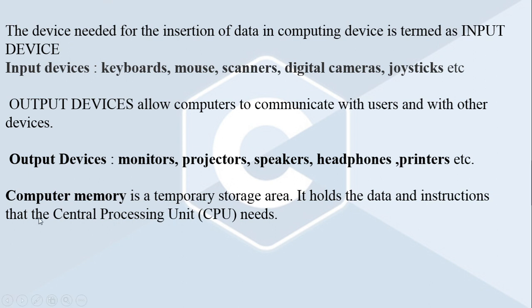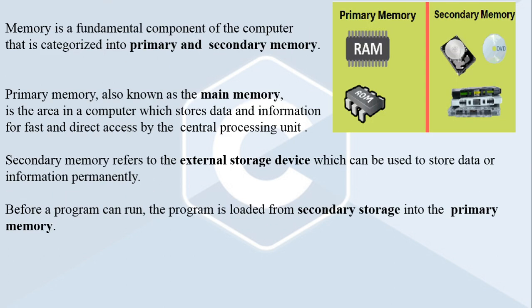The memory unit of a computer is a temporary storage area. It holds the data and instructions that the central processing unit needs for its execution. We have two different types of memory: primary and secondary memory. Primary memory is used for temporarily storing data and instructions, while secondary memory or external memory is used for storing data and instructions permanently.